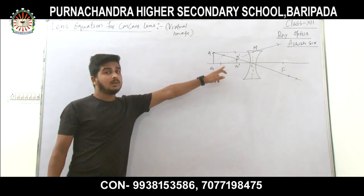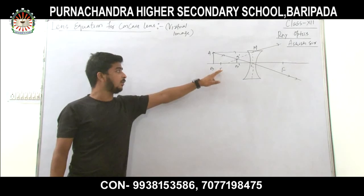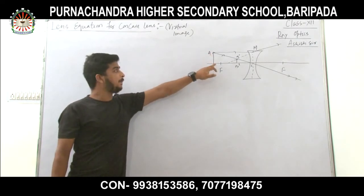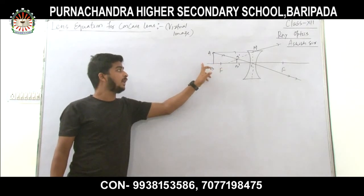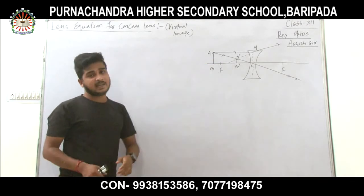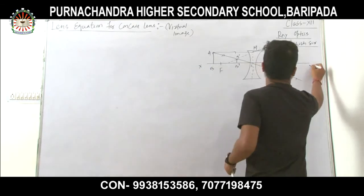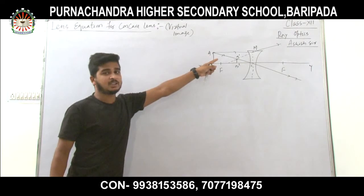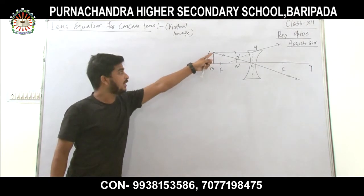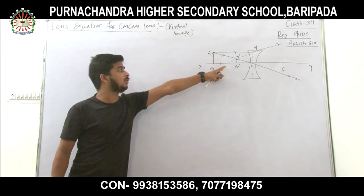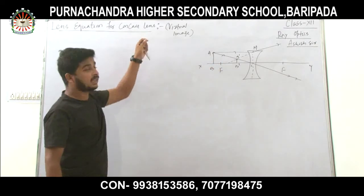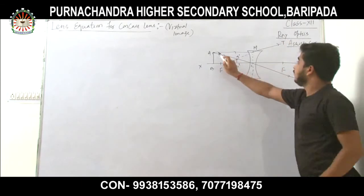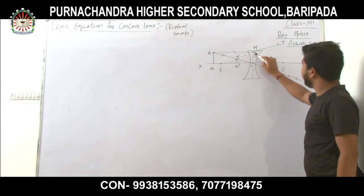Suppose an object is placed beyond F — that is, behind F. You can also place the object on F, inside F, or wherever you wish. I will place the object beyond F. Here XY is the principal axis, C is the optical center, and F is the focus. Suppose a ray of light AM comes parallel to the principal axis, incident at point M. A concave lens is also known as a diverging lens, so it diverges the ray of light — say towards T.